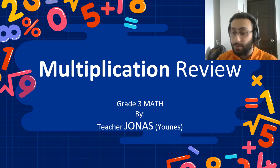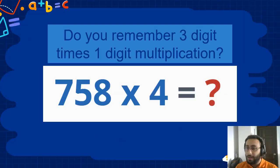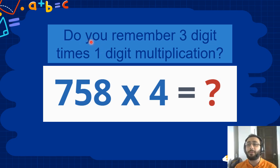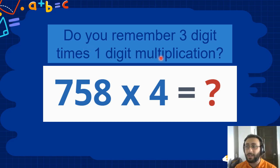Let's get to it. We remember how to do three-digit times one-digit multiplication — it's quite easy.